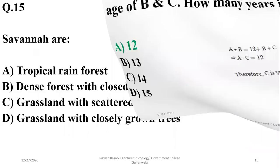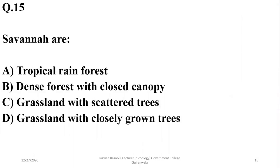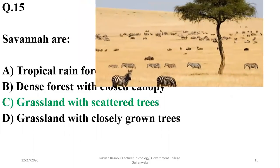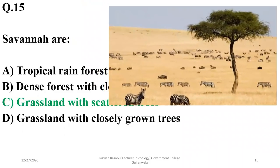Question 14: Savannas are tropical grasslands with scattered trees, found in Africa. Alpha is the right option.